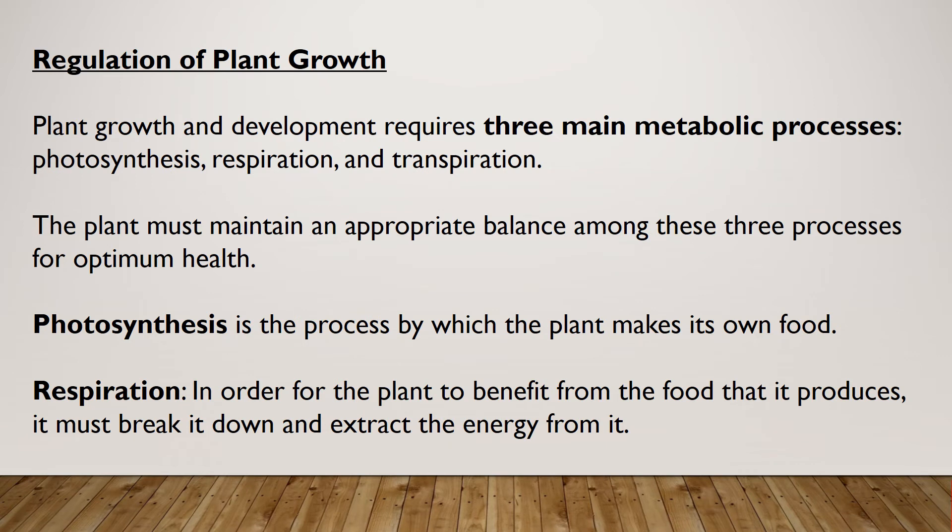Regulation of plant growth requires three main metabolic processes: photosynthesis, respiration, and transpiration. The plant must maintain an appropriate balance among these three processes for optimum health.